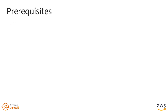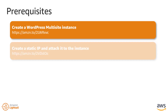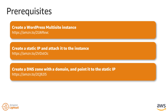Before completing these steps, there are a few things we need to do first. Create a WordPress Multisite instance in Amazon LightSail. Create a static IP and attach it to the instance. Create a DNS zone with a registered domain, then point it to the static IP in Amazon LightSail. Browse to the article shown on the screen if you need information about how to set up these prerequisites.